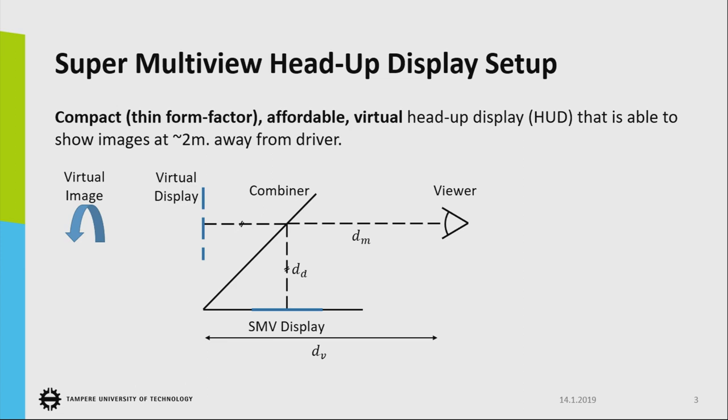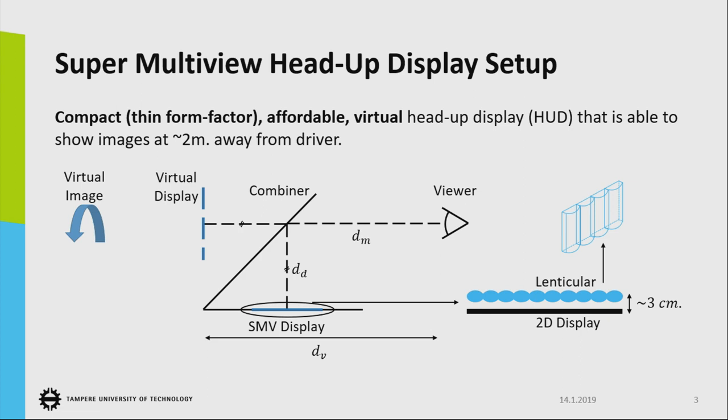The total distance, because of the semi-transparency of the combiner, this display appears here. So the distance between the viewer and the virtual display is viewing distance, and the virtual image appears somewhere here. As the image projection unit, we utilize the super-multi-view display, which consists of the conventional 2D display plane and the lenticular sheet, which is a 1D cylindrical lens array that acts like a lens in the horizontal direction and glass in the vertical direction. The typical thickness form factor of this display is around 5 centimeters, like 2-3 centimeters, which is quite thin in the head-up display setup.